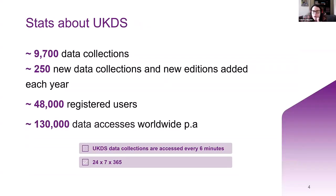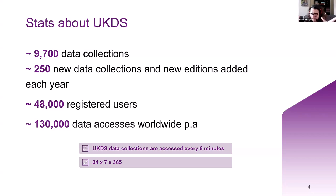Currently we have over 9,700 data collections, and we usually get around 250 new data collections and new editions added each year to our catalogue. We have roughly 48,000 registered users, and they account for 130,000 data accesses worldwide — some data can be downloaded, some needs to be accessed remotely. To put this in practice: a UK data collection is accessed every six minutes. This is the power of secondary data research.